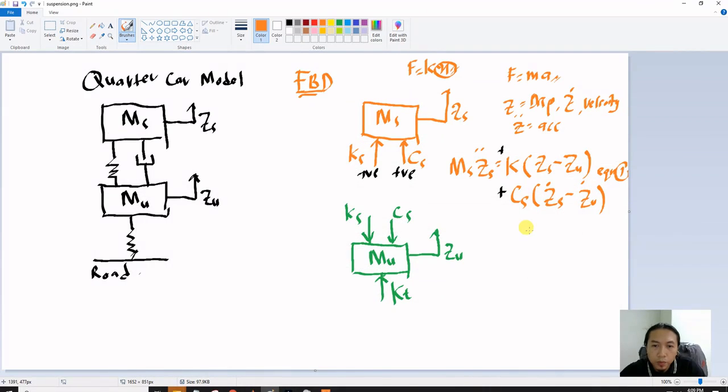Okay, for equation number two, for this one, okay same as here. So Mu zu double dot from F equal to ma. So from here, Ks downward is minus.